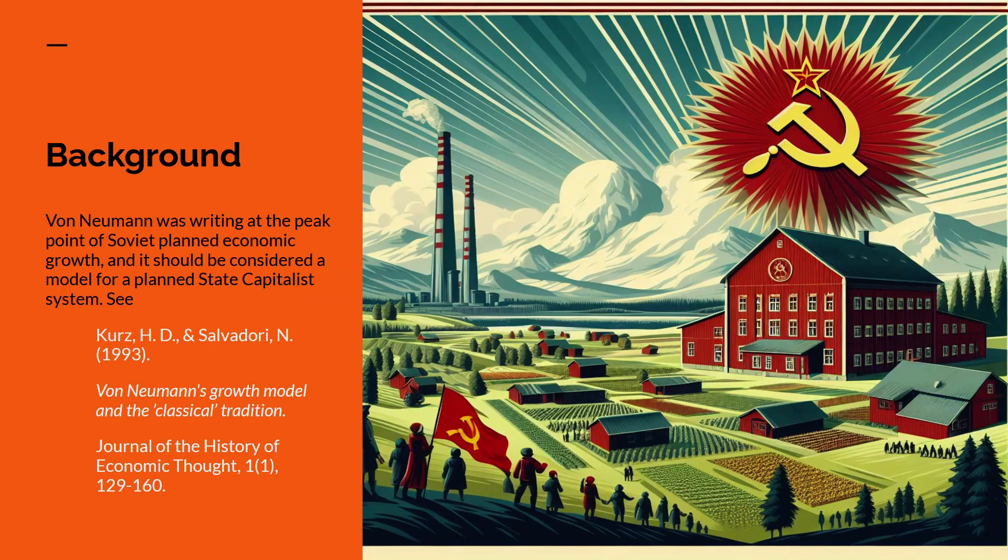Now you have to understand the time things were being written. He was writing this in the 30s which was the peak point of planned Soviet economic growth. And it's arguable or at least it has been argued by Kurz and Salvadori that the von Neumann model is actually a model not of a capitalist economy but of a state capitalist economy, not a competitive capitalist economy, and as such it's possibly a model for something like China today.